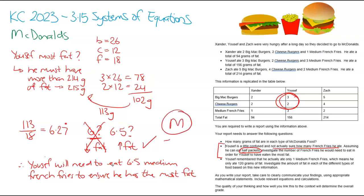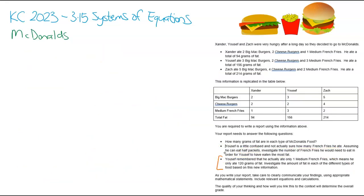The second half of merit is about proving 0 equals 0, which relates to the third and final bullet point. Yusef remembered he actually only ate one medium French fries, which means he ate 120 grams of fat. So we cross out the 3 and put in 1, cross out 156 and put in 120. This means Yusef's equation will be quite different now, and that's going to change the answers we calculated in the achieved section.